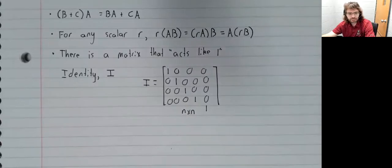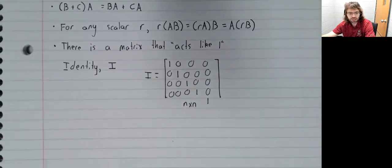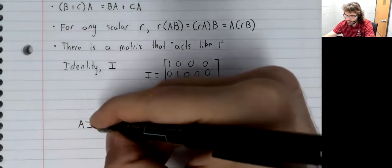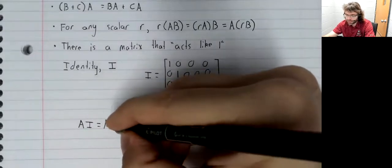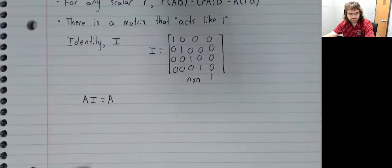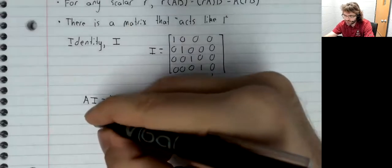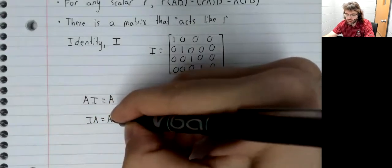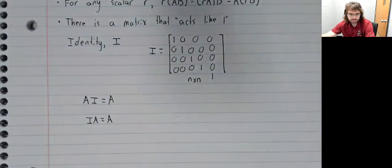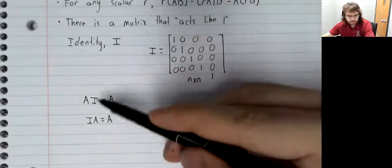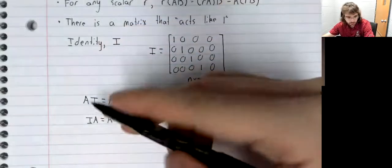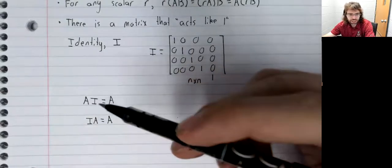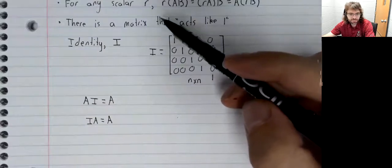And what do I mean when I say that it acts like one? I mean that multiplying by the identity matrix does not change the matrix. A brief note about this. We'll come back to this. We'll use it in this class. It might not look like much, but this is actually very important.